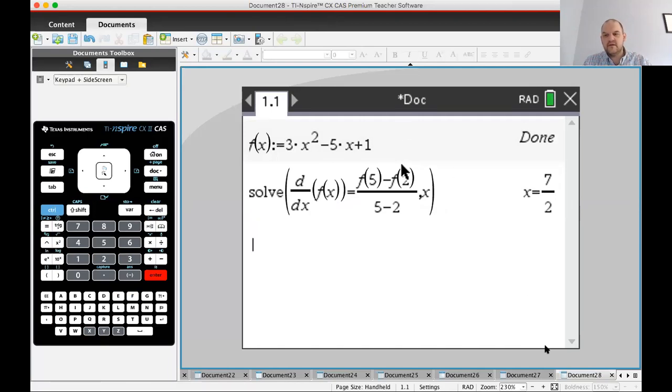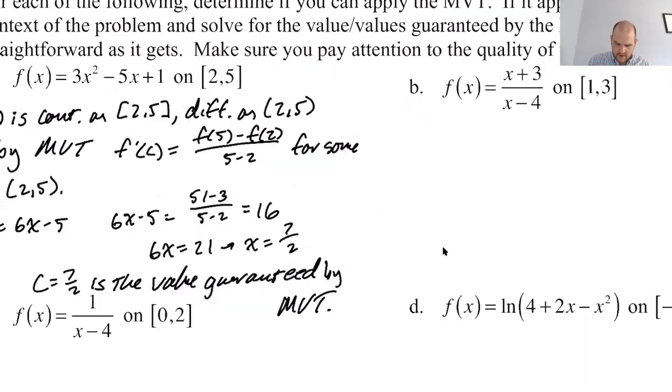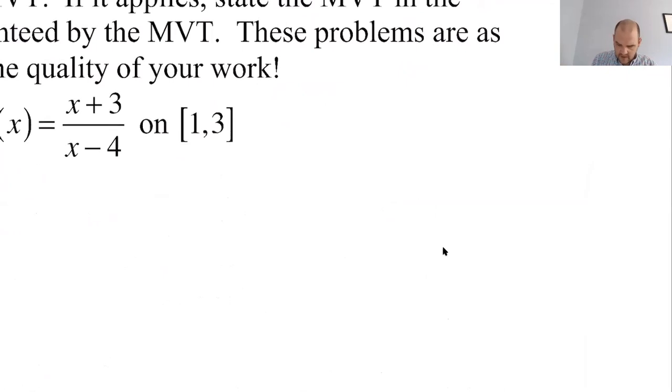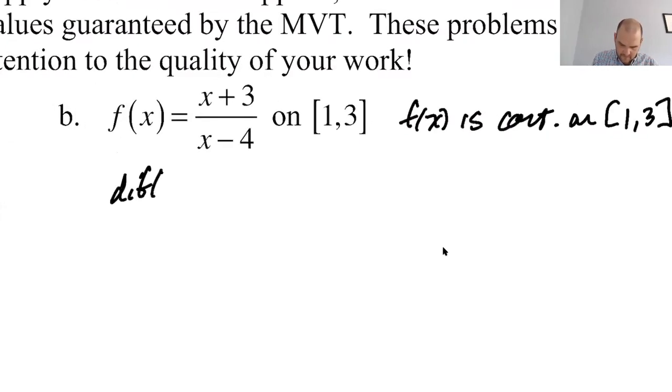Let's take a look at the next one. So where does this function have problems? It has a problem at x equals 4, but 4 is not in the interval. So the function, I'm going to start writing it up here so that I have more room. f of x is continuous, not at x equals 4, on the closed interval from 1 to 3, and differentiable on the open interval from 1 to 3. Because the only problem is at x equals 4.